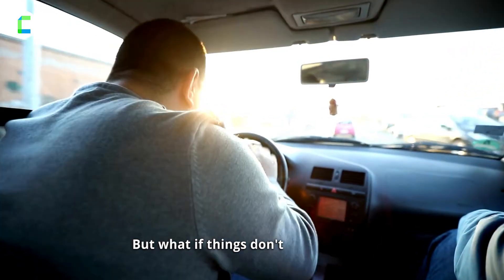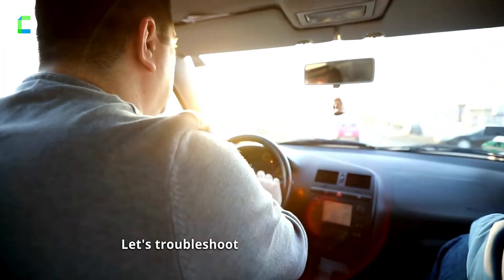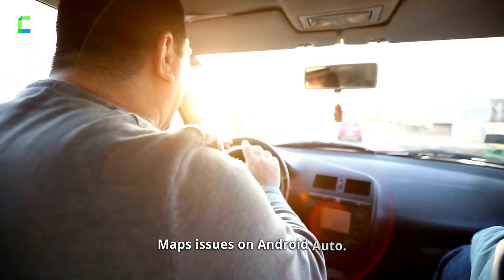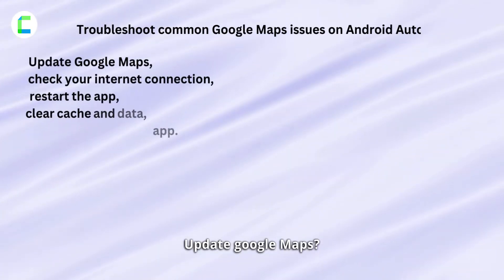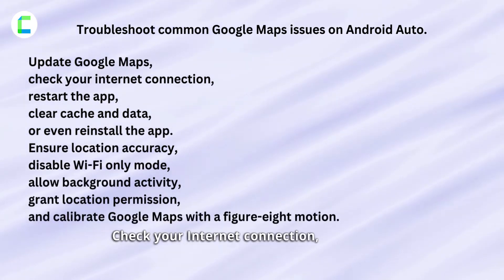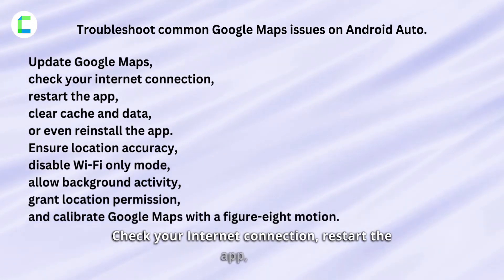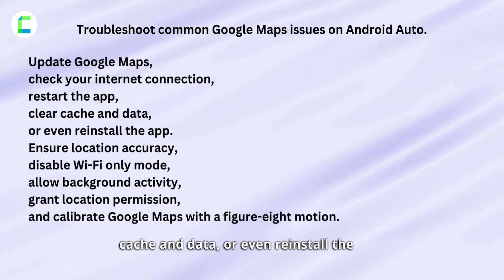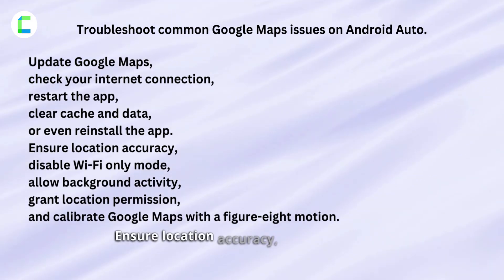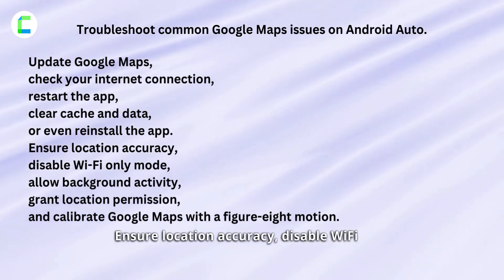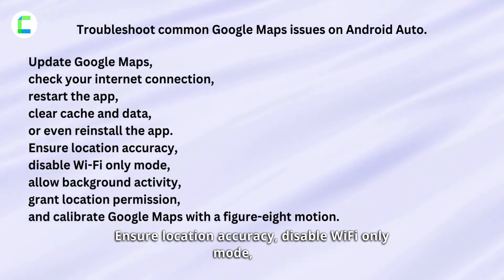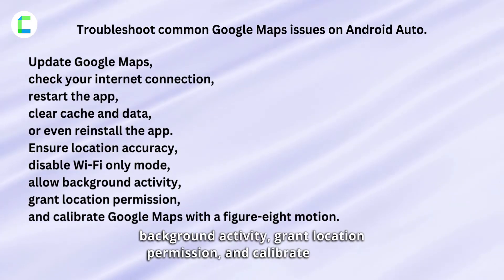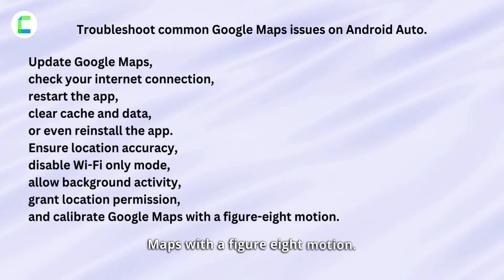But what if things don't go smoothly? Let's troubleshoot some common Google Maps issues on Android Auto. Update Google Maps, check your internet connection, restart the app, clear cache and data, or even reinstall the app. Ensure location accuracy, disable Wi-Fi only mode, allow background activity, grant location permission, and calibrate Google Maps with a figure-8 motion.